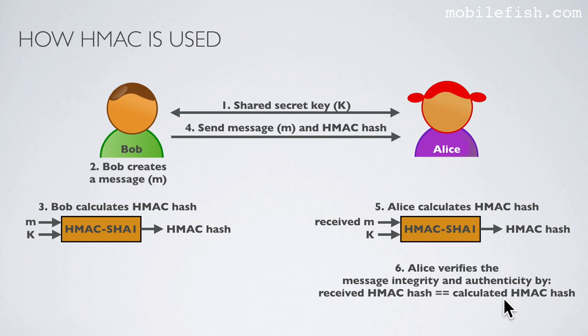Step 6: Alice verifies the message's integrity and authenticity by comparing the received HMAC hash and her calculated HMAC hash. If both values are the same, then the message is not corrupted or tampered with. Alice also knows that this message must come from Bob because he is the only person who has the shared secret key.